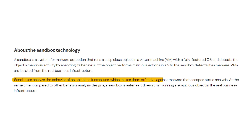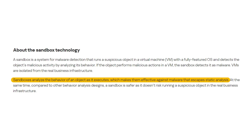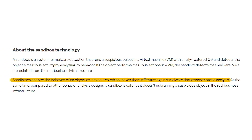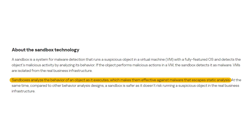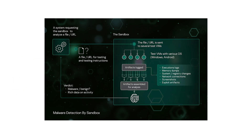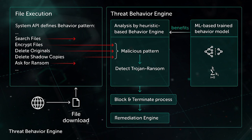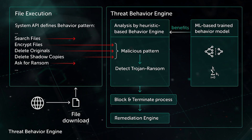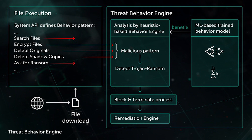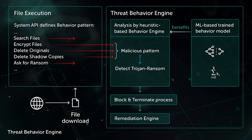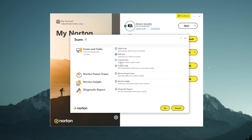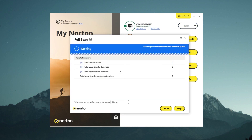Another common technique used in behavioral analysis is sandboxing. Sandboxes isolate potentially malicious software within a controlled environment, allowing security software to observe their behavior without risking damage to the host system. This is especially useful for analyzing suspicious email attachments or downloads. Lastly, we have pattern recognition — behavioral analysis systems use pattern recognition to identify suspicious sequences of actions that might indicate a malware attack. By detecting patterns that deviate from the norm, these systems can raise alarms and take necessary actions.